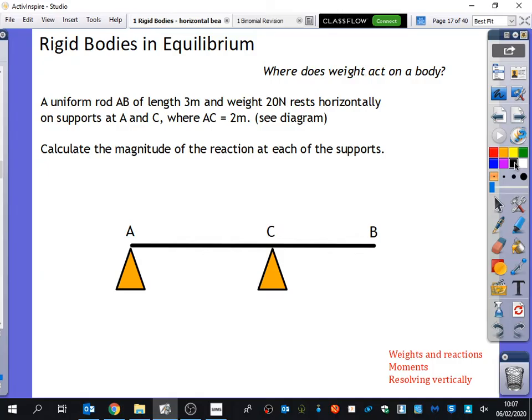Okay, so rigid bodies in equilibrium. Here we go. Now we're starting to get to actually what a mechanics question might look like here. And it says, a uniform rod AB of length 3 metres and weight 20 newtons rests horizontally on supports at A and C, where AC equals 2 metres. See diagram. Calculate the magnitude of the reaction at each of the supports. I've written three things down in the corner of the page in red here. I've written weights and reactions, moments, and resolving vertically.